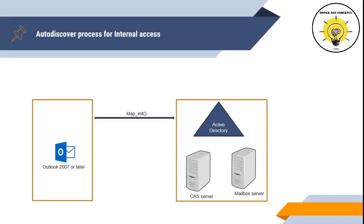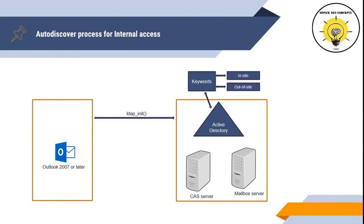Outlook sends an LDAP query to Active Directory to locate all available SCP objects. Outlook initializes this LDAP connection using the LDAP_init function. It then locates the keywords attribute of the SCP record and checks the in-site list and out-of-site list. The in-site list contains SCP records that have Autodiscover site scope defined, specifying the site to which Autodiscover will connect. If in-site list records are not found, an out-of-site list is generated.